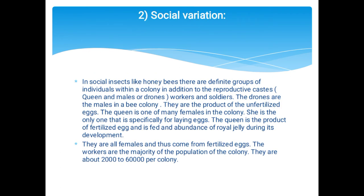Social variation: in social insects like honeybees, there are definite groups of individuals within a colony, including the reproductive caste — queens, males, drones, workers, and soldiers. Drones are males produced from unfertilized eggs by parthenogenesis. The queen is the only female specialized for laying eggs, produced from a fertilized egg and fed abundant royal jelly during development. Workers, numbering about 2,000 to 60,000 per colony, collect pollen and nectar and carry them to the nest.